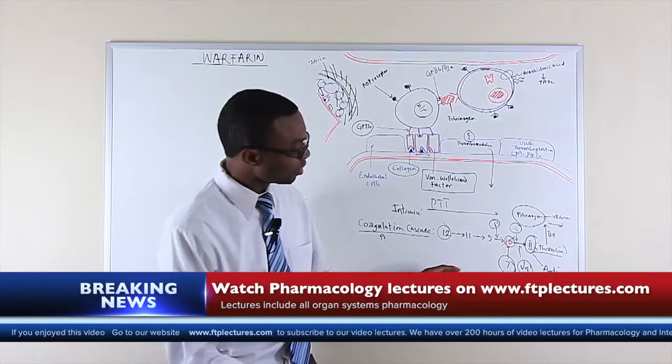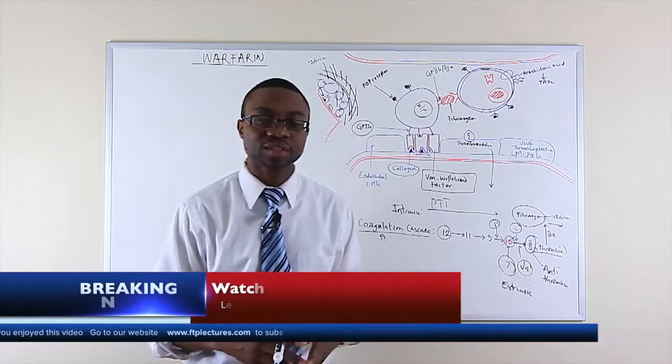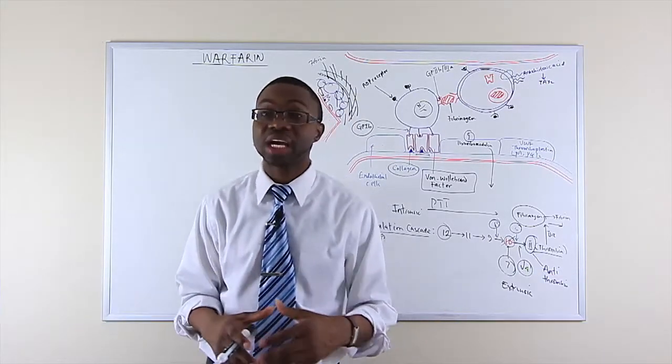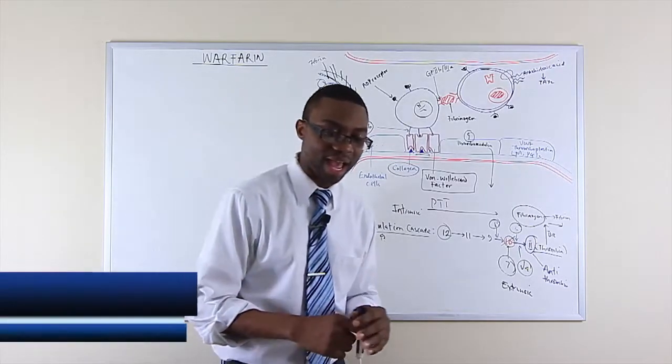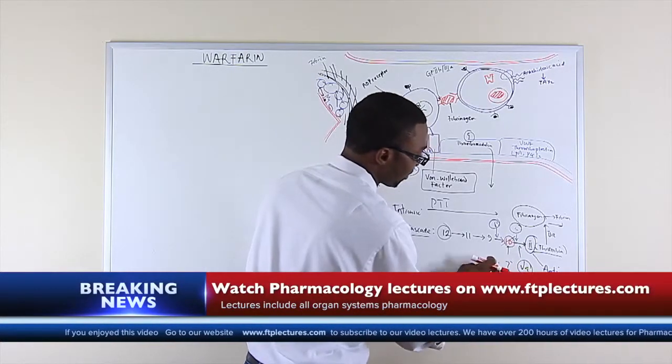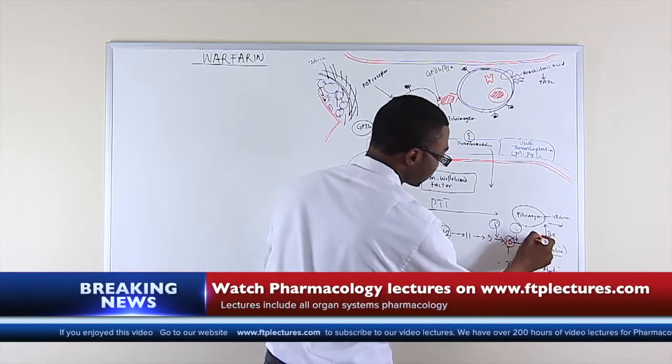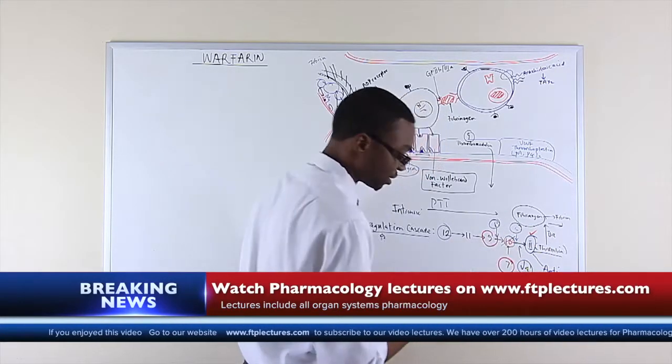Warfarin has an effect on certain coagulation factors and these coagulation factors are factor 2, factor 7, factor 9 and factor 10. So let's circle those. We have factor 2, factor 7, factor 9 and factor 10.